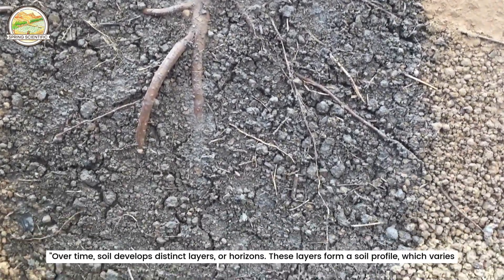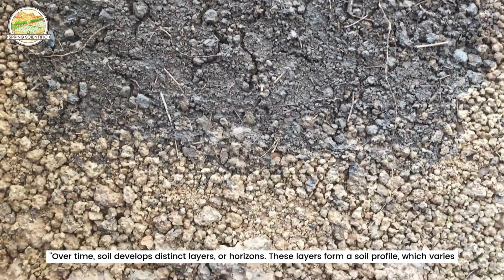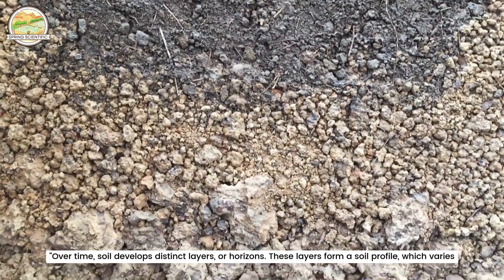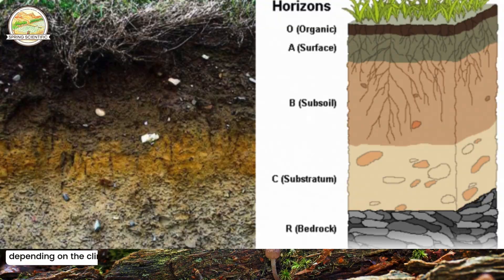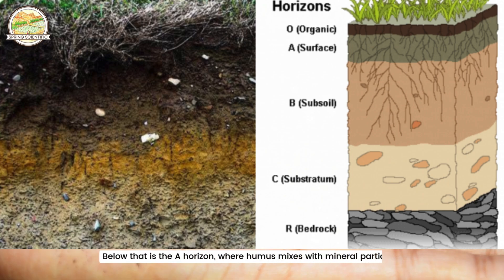Over time, soil develops distinct layers, or horizons. These layers form a soil profile, which varies depending on the climate, vegetation and parent material. The top layer, known as the O horizon, is rich in organic material.